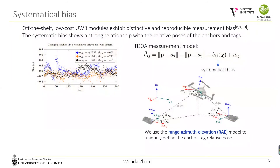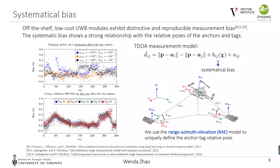In addition to measurement outliers, off-the-shelf low-cost UWB modules also show distinctive and reproducible biases under line-of-sight conditions. In a measurement testing experiment, we commanded the quadrotor to hover and yaw around the z-axis three times, each time with a different orientation of one UWB anchor. It can be observed that biases are strongly related to the relative anchor-tag pose. We also repeated the experiment with five different UWB tags and found that the bias patterns are extremely similar across chips. Since the measurement bias is consistent and reproducible, we use the azimuth-elevation model to represent the relative pose and learn the bias pattern with a neural network.